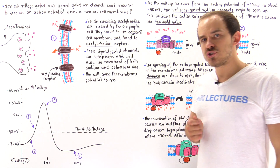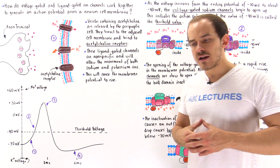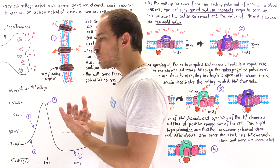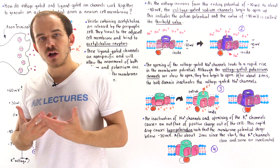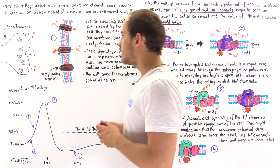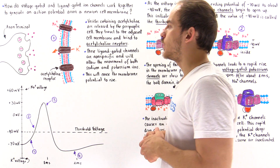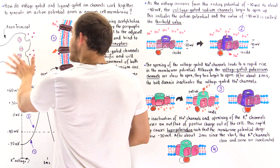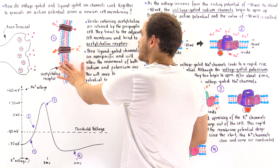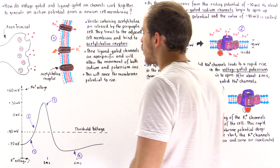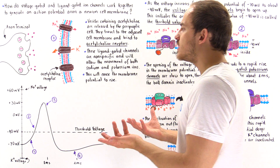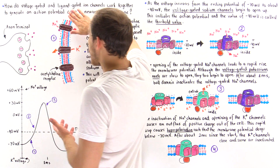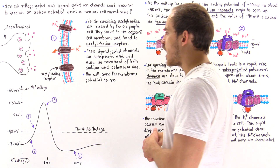Now that we've discussed voltage-gated and ligand-gated ion channels, let's see how we can combine these two channels to generate an action potential along the membrane of a neuron. We have two neurons in this diagram: the presynaptic neuron and the postsynaptic neuron. The question is, how can we actually generate an action potential on the membrane of the postsynaptic nerve cell?